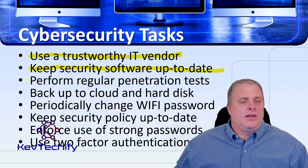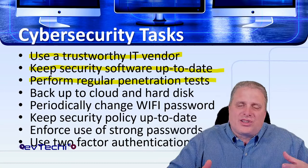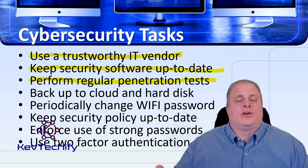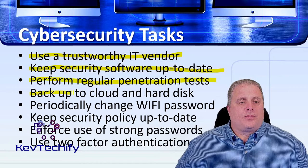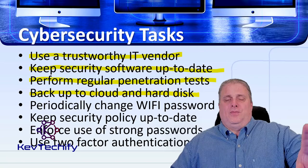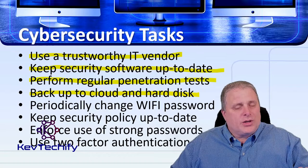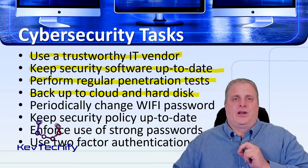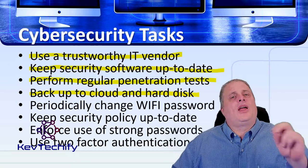Perform regular penetration tests to see if there are any vulnerabilities in your network — sometimes this requires hiring an outside consultant, a white hat hacker. Backup to cloud and hard disk: backing up to the cloud provides redundant, encrypted storage, while backing up to a hard disk and unplugging those disks gives you an offline backup. If your systems get compromised by ransomware that encrypts everything, you can restore from those offline backups because they haven't been encrypted.